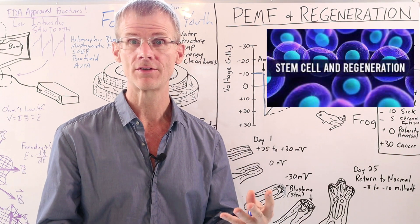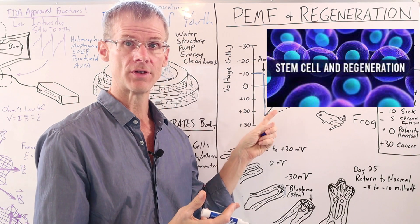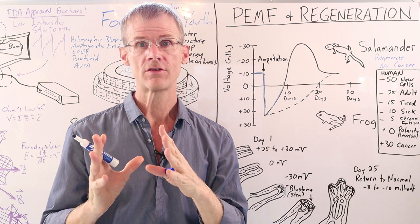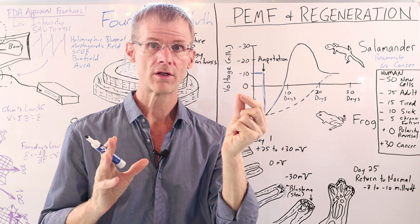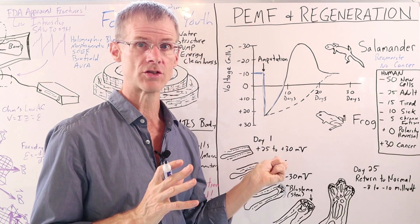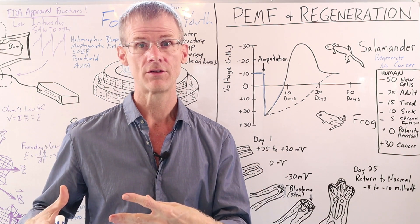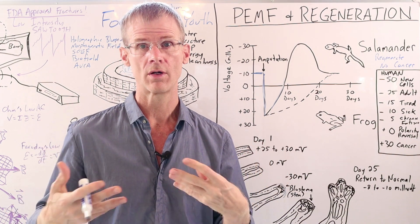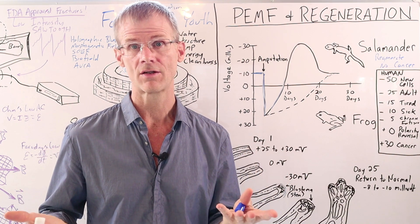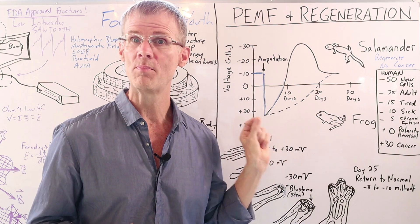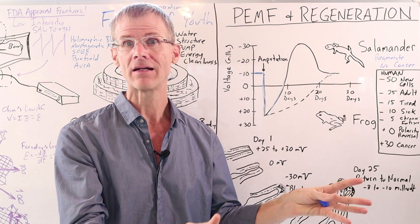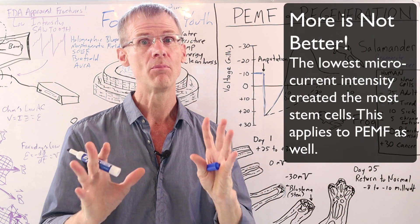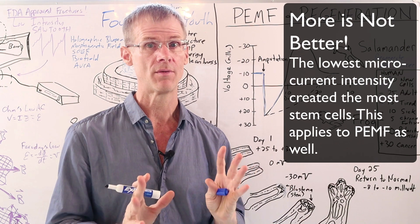But here's an interesting aside where more is not better. Frederick Brown, one of the students of Becker, found that when you lowered the current to stimulate regeneration, the de-differentiation creating more stem cells increased. Becker thought that going in that a higher intensity current would cause more stem cell production, but it wasn't the case at all. In fact, when they went down to one billionth of an ampere, almost by accident, they got the maximum de-differentiation into totipotent stem cells, proving that more is not better in microcurrent therapy and PEMF.